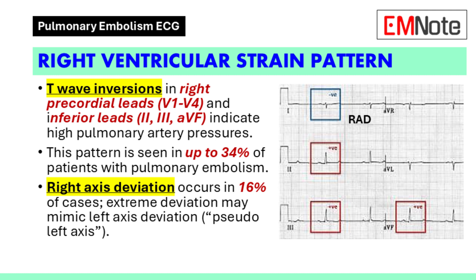In some cases, extreme right axis deviation may be observed, with the axis falling between 0 and minus 90 degrees. This phenomenon can sometimes mimic left axis deviation and is described as pseudo-left axis.